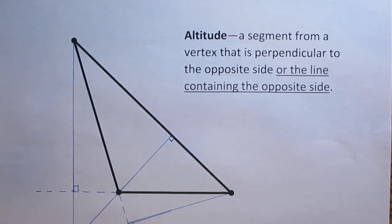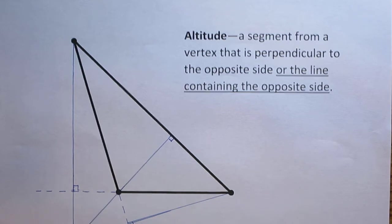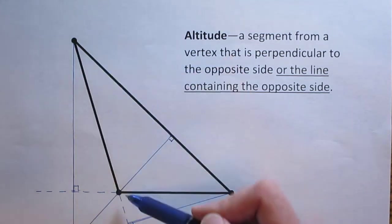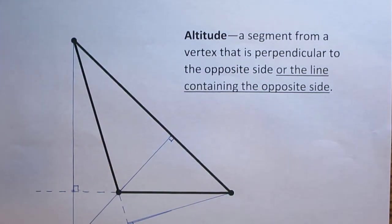Okay so we've got those altitudes all extended there and now you'll see that they do meet up at a point and this orthocenter where they all meet up is outside of the original triangle. So this is what's meant by sometimes the orthocenter can be inside or on the triangle or in this case outside of the triangle.